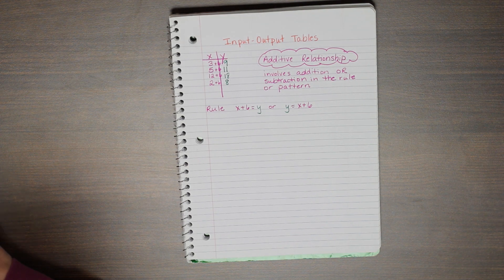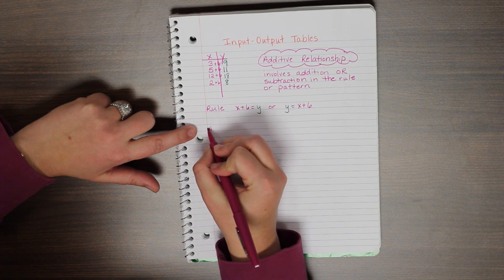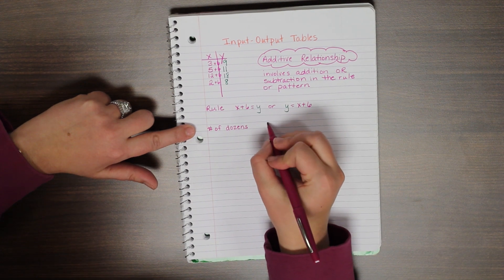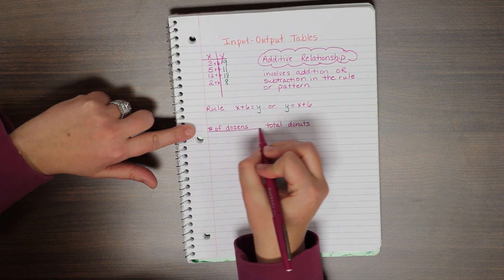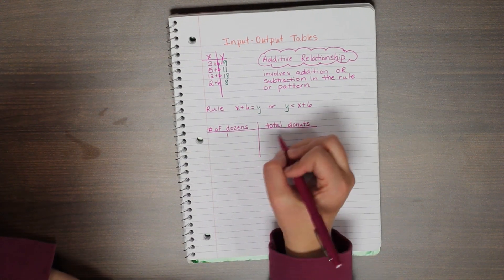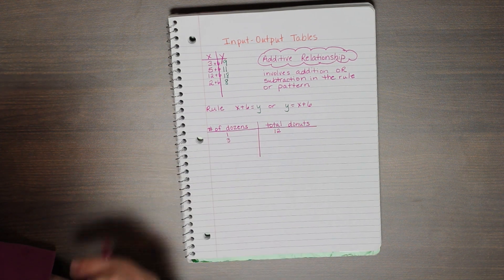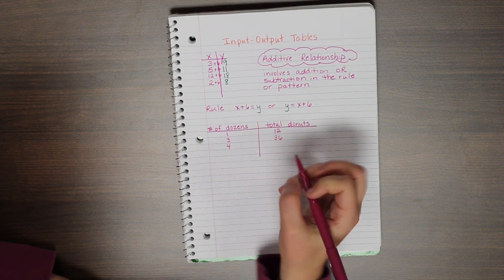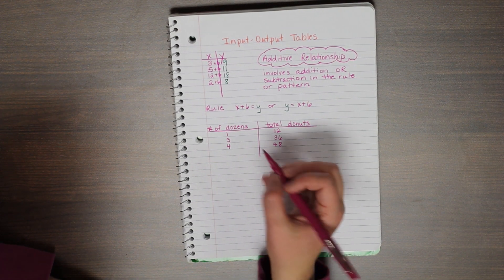Let's look at another one. So this time we're going to look at if I had a chart or table where I had my number of dozens and I had my total doughnuts. If I had one dozen, my total doughnuts is 12. If I had three dozens, my total is 36. 4 dozens, my total of doughnuts is 48. In this case, my rule or my pattern is times 12.